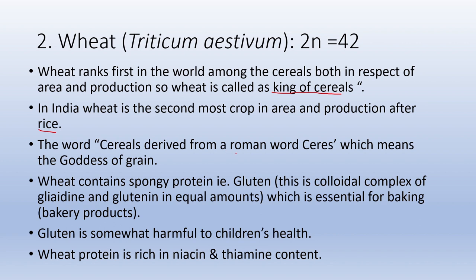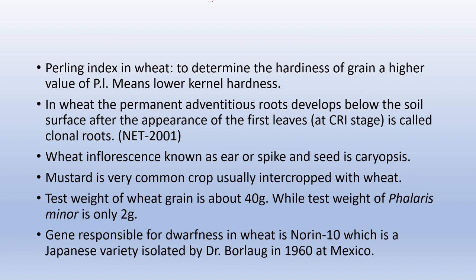Gluten is somewhat harmful to children's health. Wheat protein is rich in niacin (Vitamin B3) and thiamine (Vitamin B1) content. The Pearling Index in wheat is used to determine the hardness of the grain — a higher value of PI means lower kernel hardness. In wheat, permanent adventitious roots develop below the soil surface after the appearance of the first leaves, and this stage is called the CRI (Crown Root Initiation) stage, which is the most critical stage for irrigation. These roots are called crown roots.